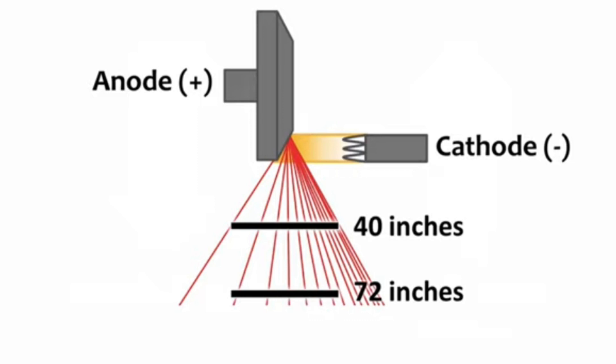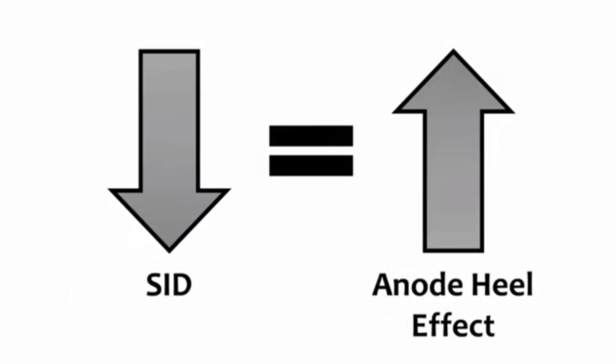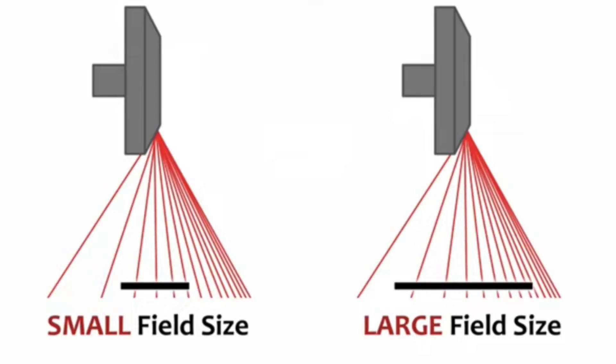Yani jis subject ka x-ray tube ke nazdeek hoga, us ke upar Heel Effect ka zyada asar parega. Jitna ek subject hum door rakhein ge utna Heel Effect kamzor parega. Aur hum yeh bhi keh saktay hain ke yeh depend karta hai SID ke upar — SID agar decrease hoti hai toh Anode Heel Effect increase hoga; agar SID increase hoti hai toh Heel Effect decrease hoga.